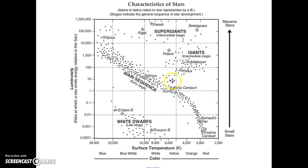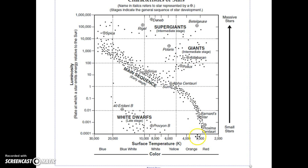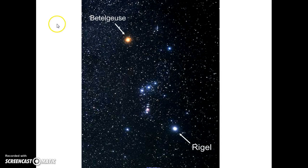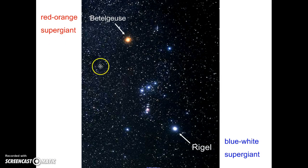Let's find those stars on the reference table. Betelgeuse is up here — it's a supergiant — and coming down to the temperature, it's in the reddish or orangish area of the graph. Rigel is also a supergiant, but it's much hotter: the temperature is a little more than 10,000 Kelvin, which puts it between white and blue-white. That's why these stars are those colors. Betelgeuse is a red-orange supergiant; Rigel is a blue-white supergiant.